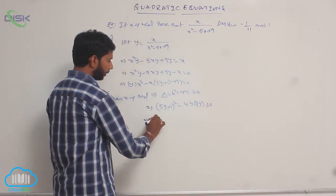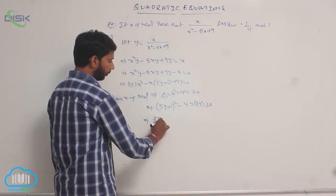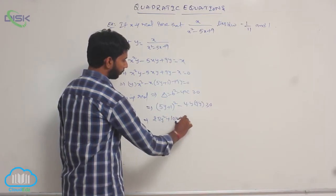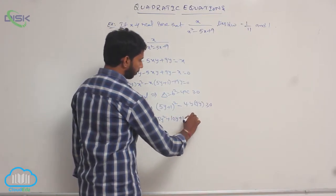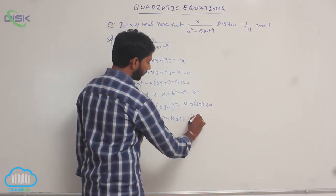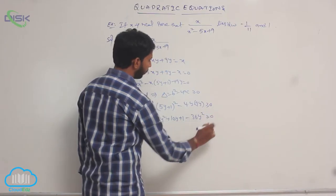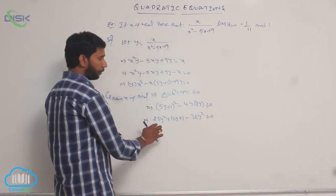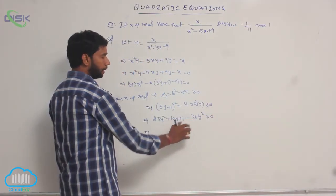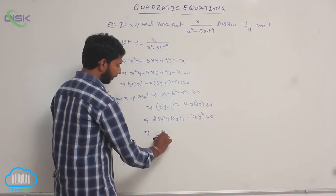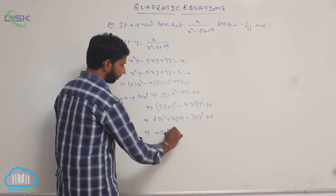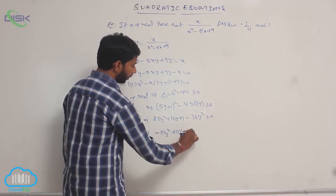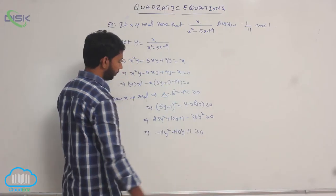Expanding the terms: 25y² + 10y + 1 - 36y² ≥ 0, which gives 25y² - 36y² = -11y² + 10y + 1 ≥ 0.